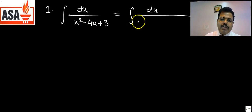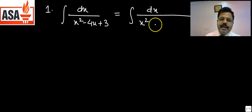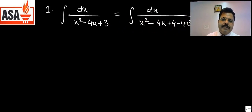For the second step, we add and subtract the square of half the coefficient of x. The coefficient of x is minus 4, half of that is minus 2, and the square of minus 2 is 4. So we add 4 and subtract 4.